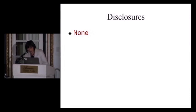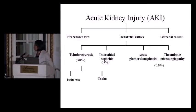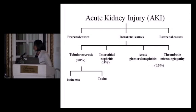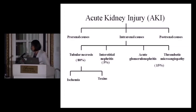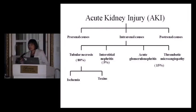I don't have anything to disclose. So first, starting with intrarenal causes for AKI: interstitial nephritis comprises about 5%, while the most common cause is ATN, which is about 80%. Together, tubular interstitial injury is the most common intrarenal cause of AKI.